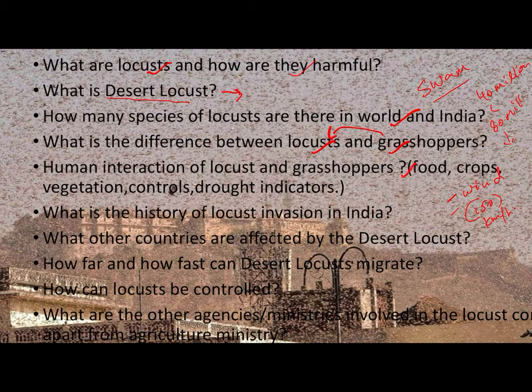But when grasshoppers grow in large numbers they turn into locusts, and a large swarm eats away entire crop produce. They have a highly feeding habit and destroy the vegetation cover. After passage of a locust swarm through an agricultural field, it indicates the existence of drought — making locust a drought indicator.